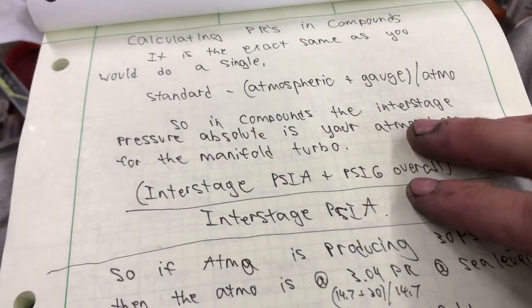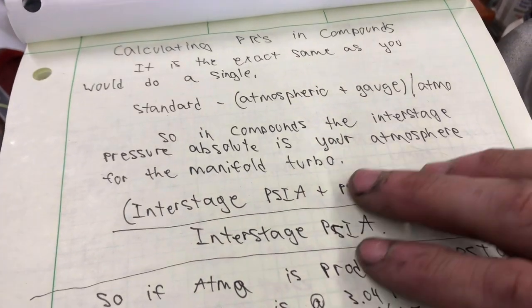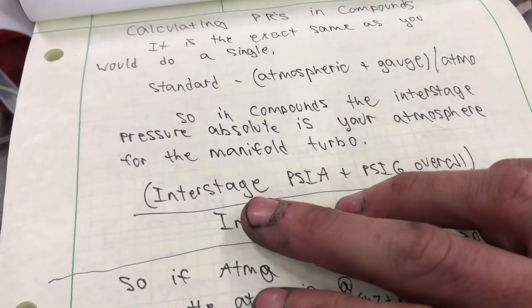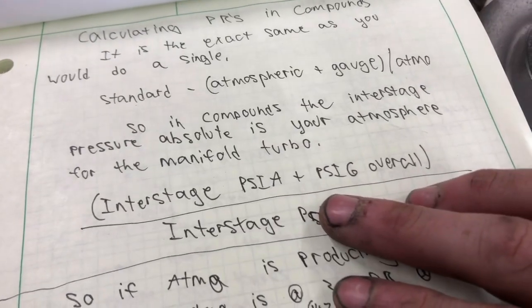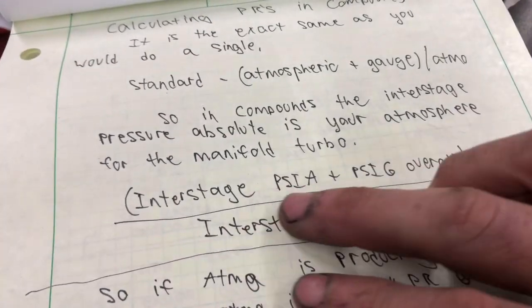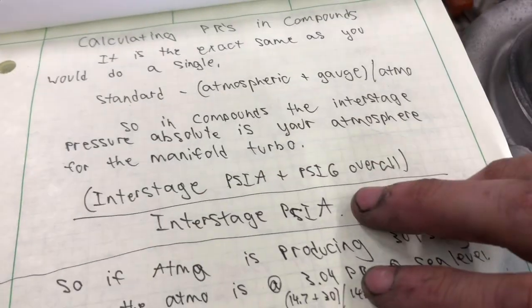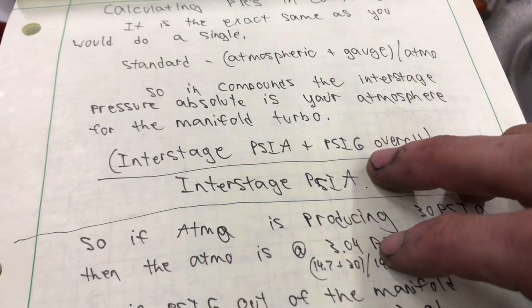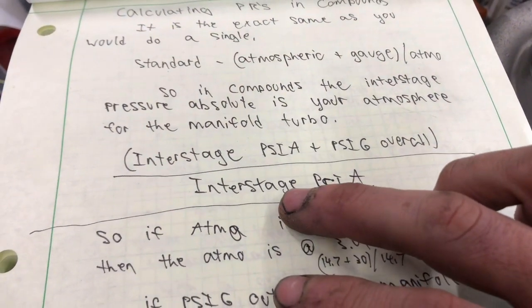This is going to be at sea level, if you need to find your pressure where you're at above sea level, there's a lot of apps that do that, calculators that do that. I have an app for airplanes that does it really cool, and it gives you the base density and all kinds of fun stuff. So on compounds, the interstage pressure absolute is your new atmosphere for the manifold turbocharger.